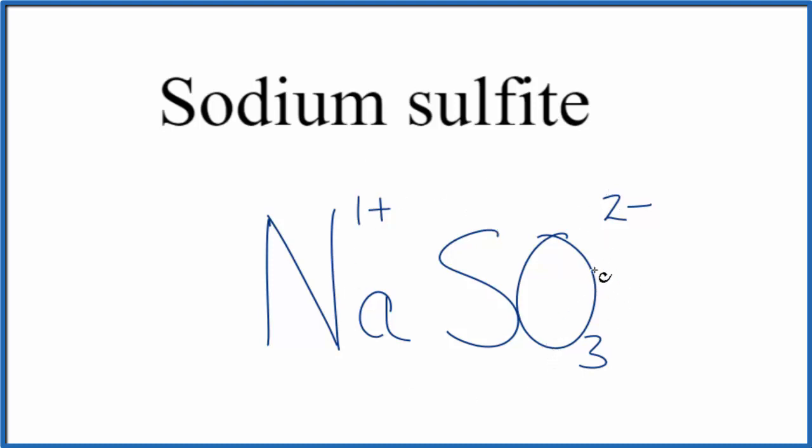So we can use a bit of a trick called the crisscross method to figure out the formula for sodium sulfite. We can move the 2 down here and the 1 over here. We don't write 1 by convention. This is the formula for sodium sulfite.